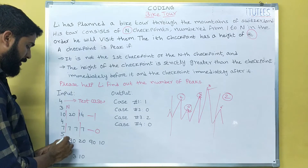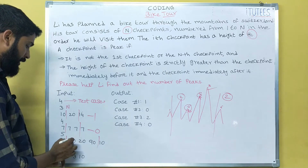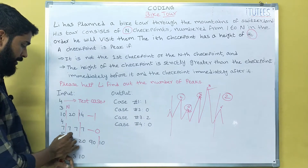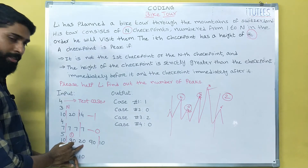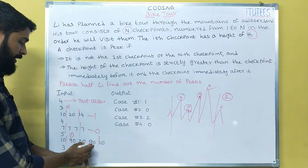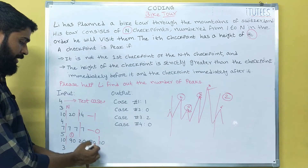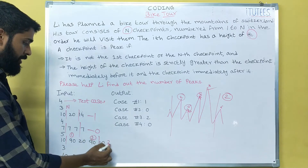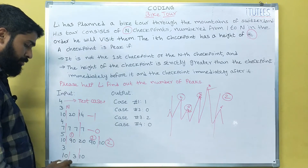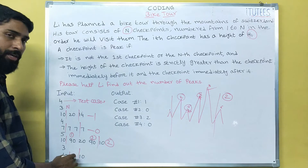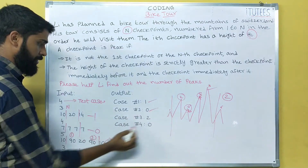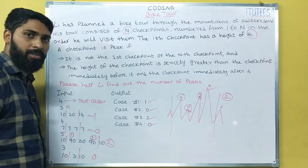In the third case, ignoring the first and last: 90 is greater than 10 and greater than 20, so count is 1. Then 20 is not greater than 90, so ignore. Then 90 is greater than 20 and greater than 10, so count becomes 2. In the fourth case, ignoring the two ends, the middle value is not greater than 10, so count is 0. Final answers: Case 1 is 1, Case 2 is 0, Case 3 is 2, Case 4 is 0.